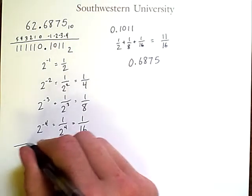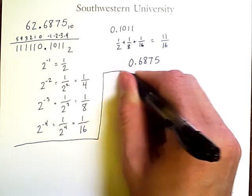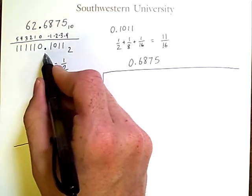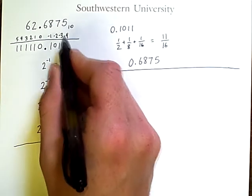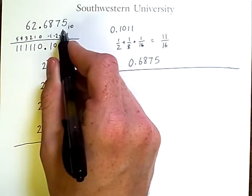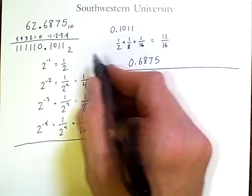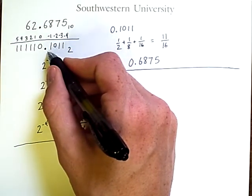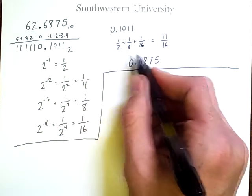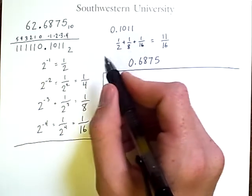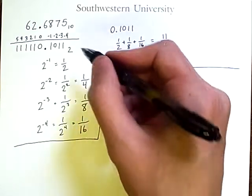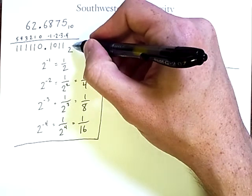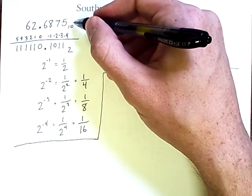Now, that is how we would convert from a binary number with a fractional component into a decimal number with a fractional component. We simply interpret the digits after the binary point as having these negative exponents and add them up accordingly. But how would we get this binary result if we started with this decimal result?